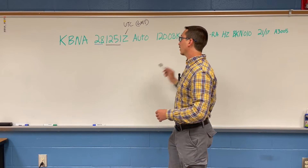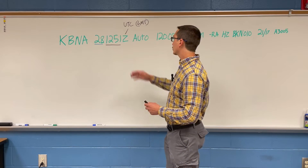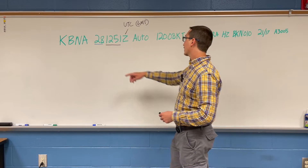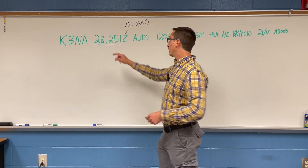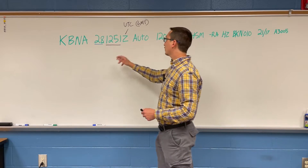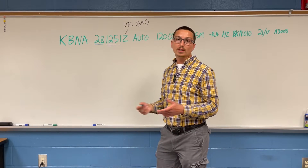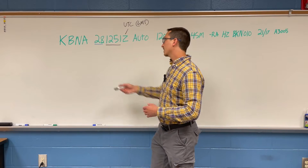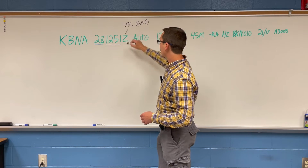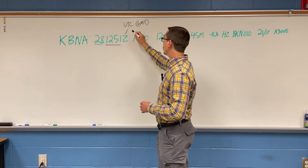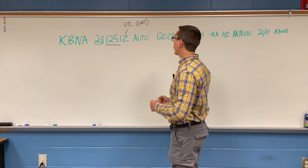On the test, they might give you a METAR report and ask what time the report was created. They might say '1251 UTC,' '1251 Eastern Standard Time,' '1251 Pacific Time,' or give you the airport and a local time zone. In this case, Nashville would be Central Time. You have to be aware it's always Zulu — always UTC, which is Greenwich Mean Time — the universal time for aviation.